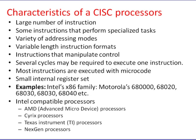Most instructions take multiple clock cycles to execute. CISC has a small internal register set of less than 32 registers and uses more transistors. For example, the Pentium 4 CISC processor has approximately 55 million transistors.